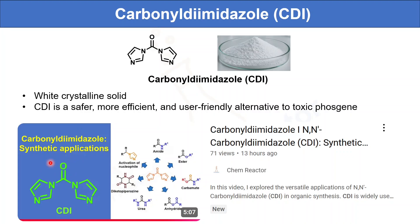In the synthetic applications of CDI, I already uploaded a video on this topic. We can make amides, esters, carbamates, and anhydrides by activating carboxylic acids. Along with this, we can also do cyclization reactions as well as substitution reactions using CDI. For more details on synthetic applications of CDI, you can watch that video on YouTube.